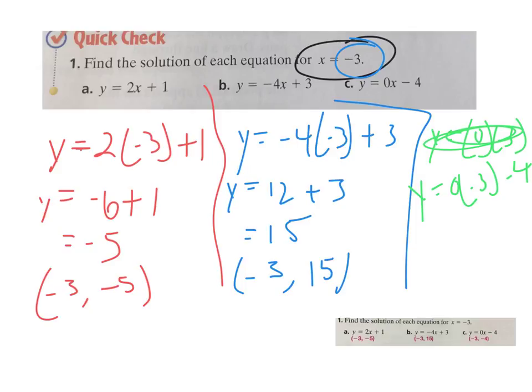Second one, we're going to go ahead and work out here. So y equals negative 4 times negative 3 is positive 12 plus 3. And then 12 plus 3 is 15. So we start with that negative 3 in the x place, and then 15 for the y. And then the last one over here, we have 0 times negative 3, which is 0. So y equals 0 minus 4, which is just negative 4. So our ordered pair becomes negative 3, negative 4.